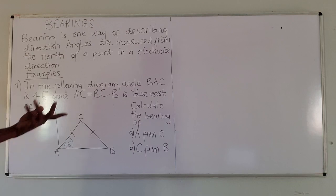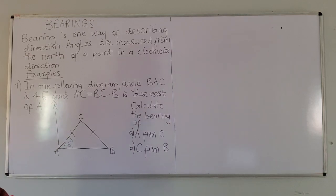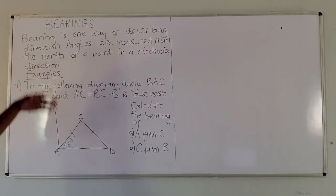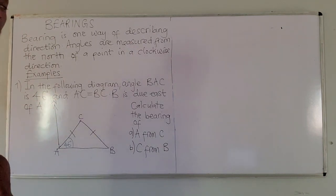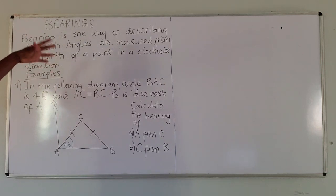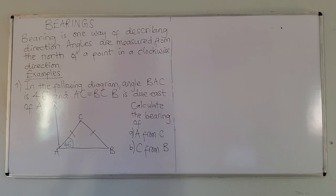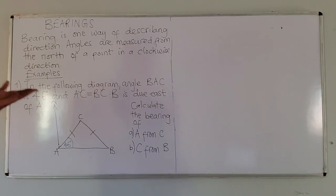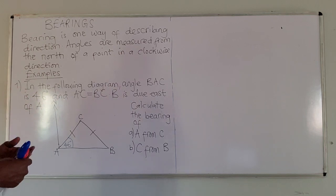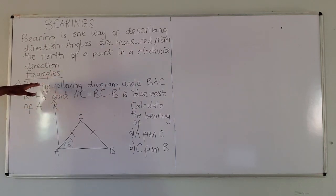Without wasting much time, what is bearing? Bearing is one way of describing the direction. Angles are measured from the north of a point in a clockwise direction. So all the angles when we measure have to be going in a clockwise direction.